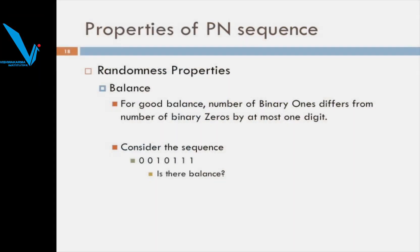These properties are called randomness properties. The first is the balance property: for good balance, the number of binary ones should differ from the number of binary zeros by at most one digit. Considering the sequence 0010111, the number of 1s is 4 and the number of 0s is 3. The balance property is satisfied because the total number of 1s exceeds the total number of 0s by exactly 1.